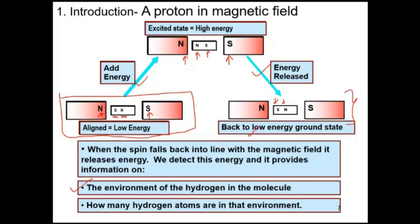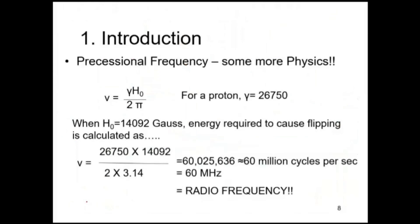It also gives information on how many hydrogen atoms are present in the environment. So if we can measure this energy, we get two types of information: what types of environments are present in the molecule, and how many total hydrogens are there in the molecule. Now let's find out what the precessional frequency is.